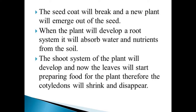During the early stages, the seeds will get food from the cotyledon. The seed coat will break and a new plant will emerge out of the seed. When the plant develops a root system, it will absorb water and nutrients from the soil. The shoot system of the plant will then develop and the leaves will start preparing food for the plant, and therefore the cotyledons will shrink and disappear.